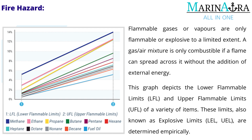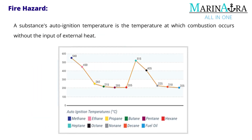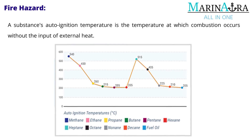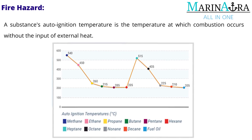Flammable gases or vapors are only flammable or explosive to a limited extent. A gas/air mixture is only combustible if a flame can spread across it without the addition of external energy. This graph depicts the lower flammable limits (LFL) and upper flammable limits (UFL) of a variety of items. These limits, also known as explosive limits (LEL, UEL), are determined empirically.